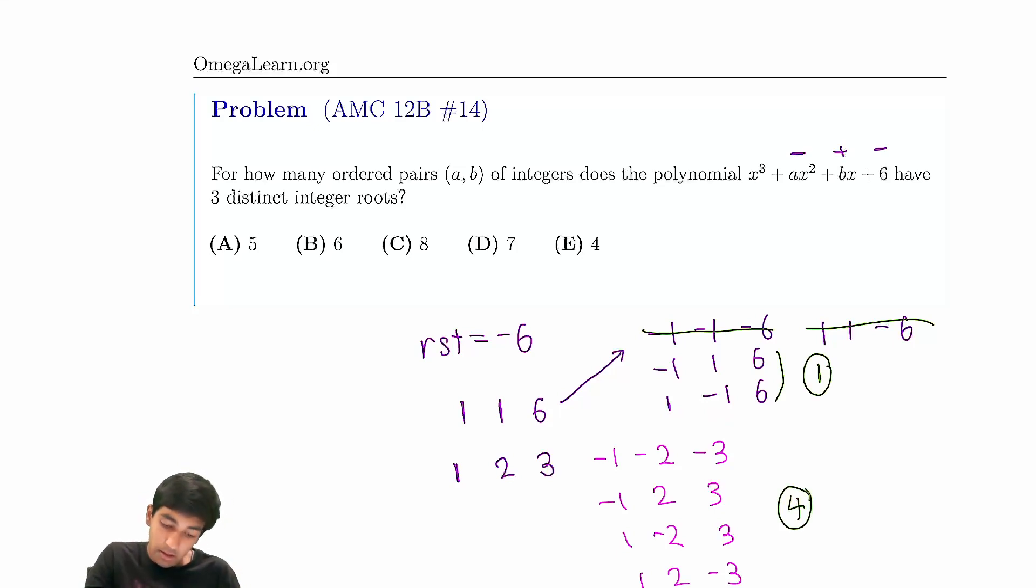In this case, we've got four possibilities, all of which are indeed going to give different values of A and B because of the fact that they're all distinct triplets of roots. So our total answer is just going to be 4 plus 1, which equals 5. Hope you enjoyed this video.